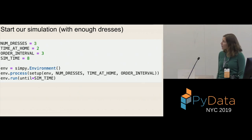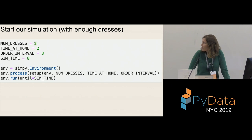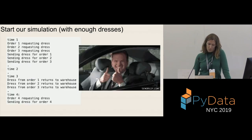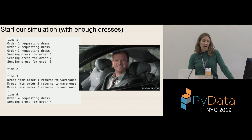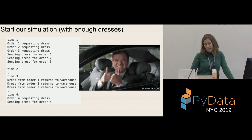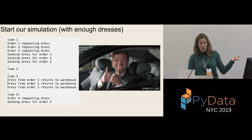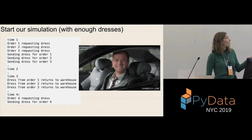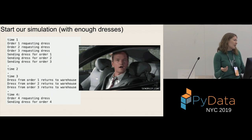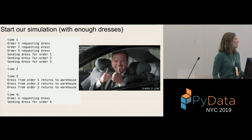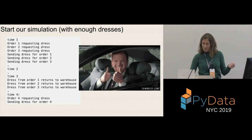Now we run our simulation with enough dresses. We start with three dresses because we have three orders, run through it, and everything is fine. We have all our orders, we send our dresses, they come back to the warehouse, and we're able to send out the dress for order number four. You might even argue we have too many dresses at this point because technically we have idle capacity. Everyone's happy, but we could have been a little leaner perhaps.